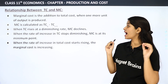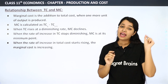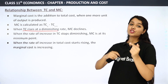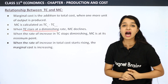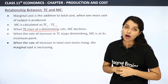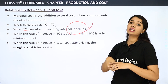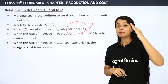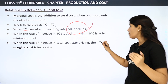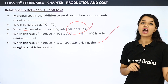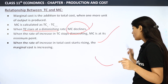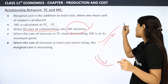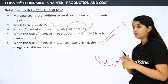When TC rises at a diminishing rate, MC declines. So in the initial stages, when our total cost starts rising slowly at a diminishing rate, our marginal cost decreases — MC is falling while TC is rising at a diminishing rate.